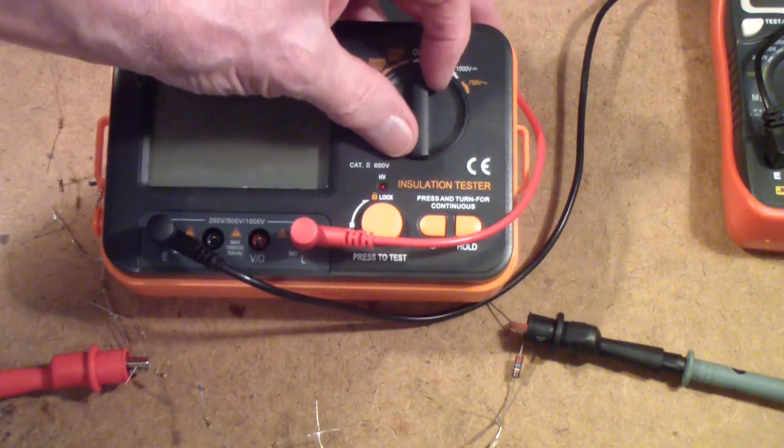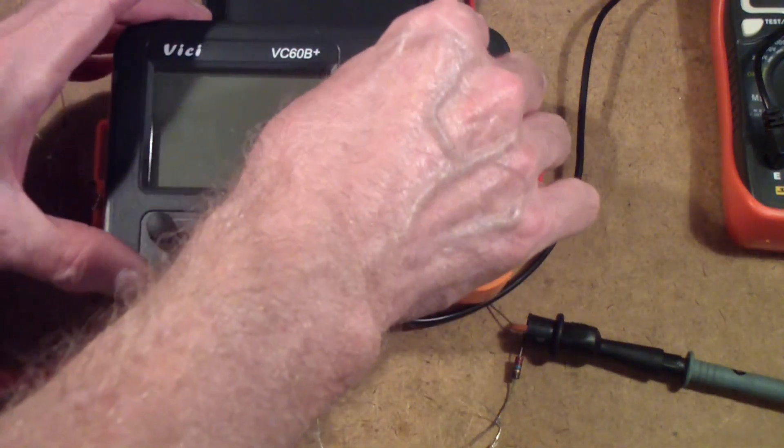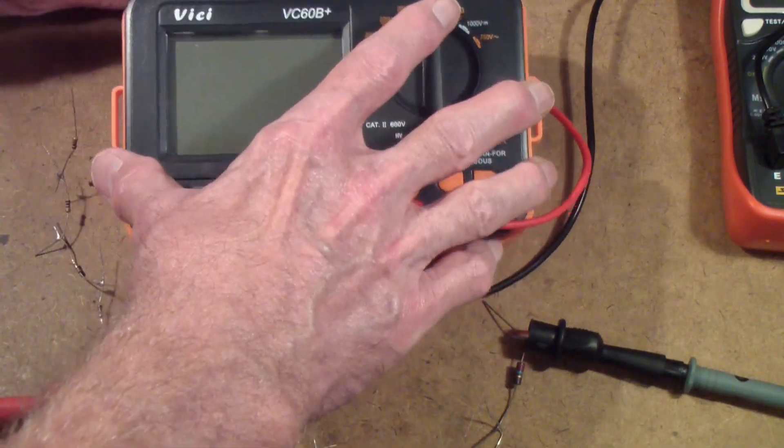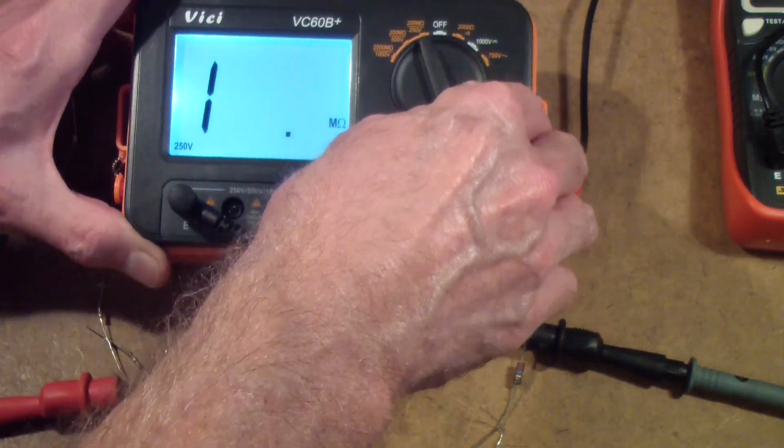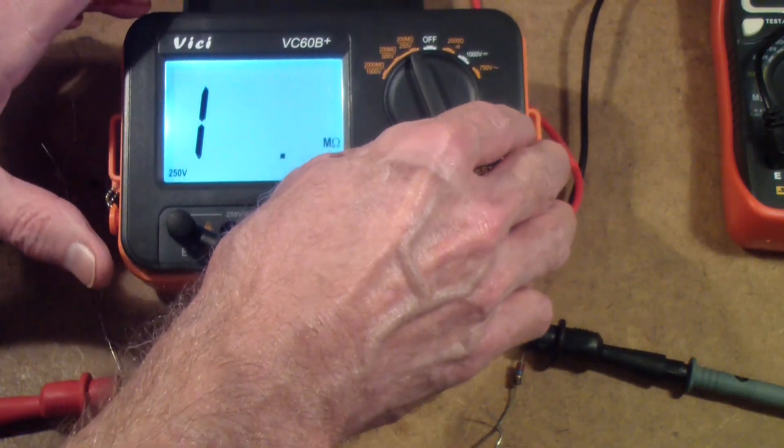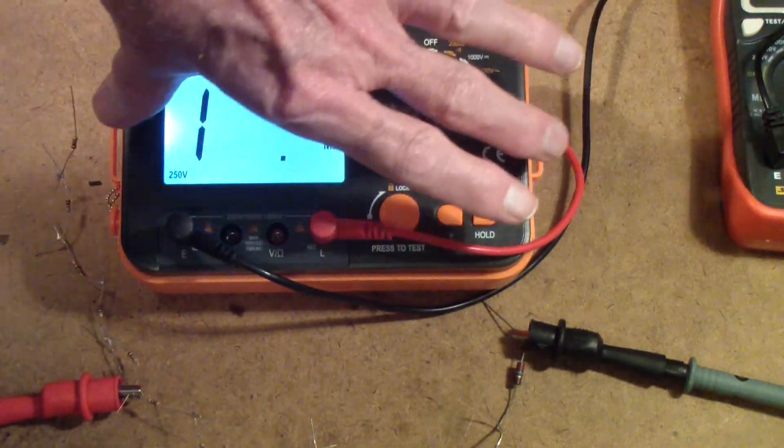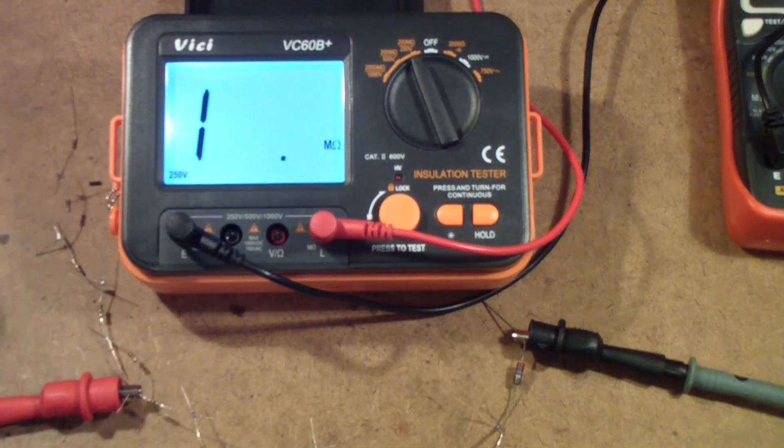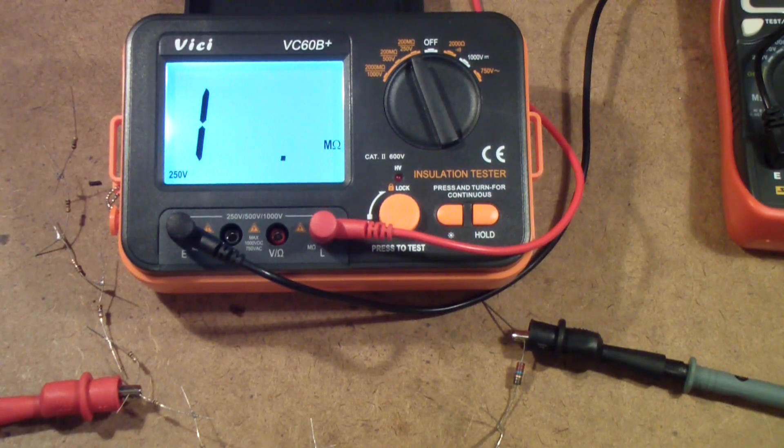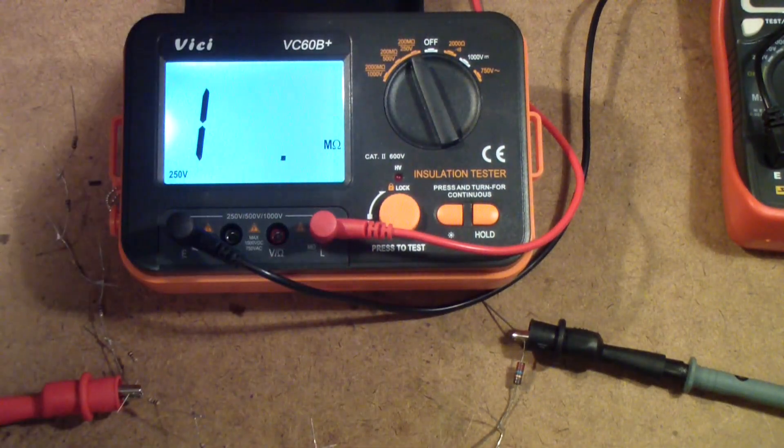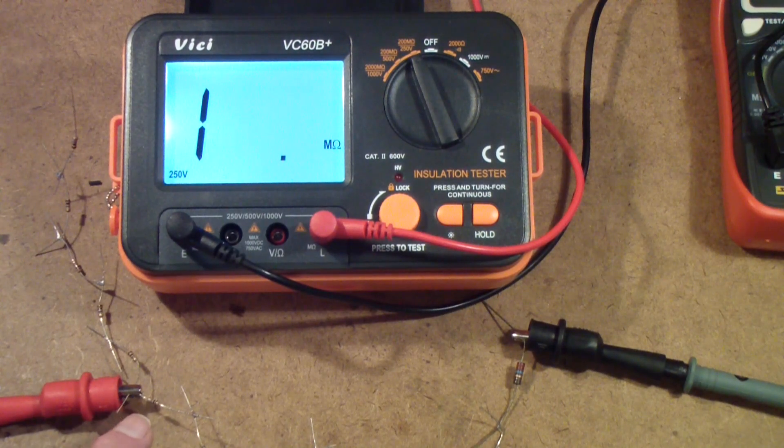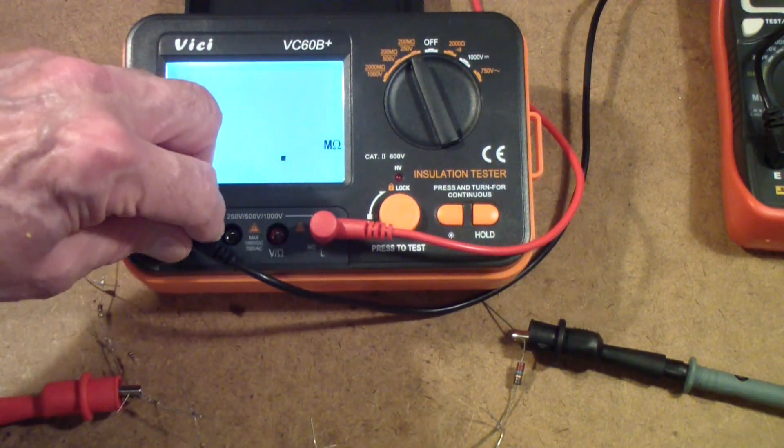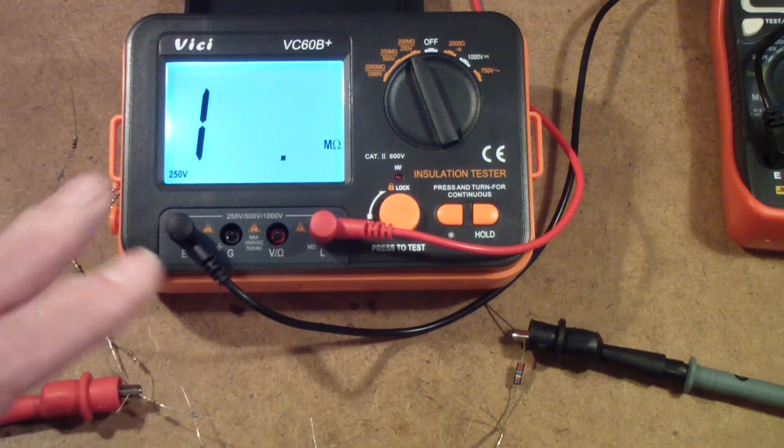So this VC60B, I'm going to try to prop it up on part of its stand there. It doesn't really come with a proper stand. This is just the cover that goes over the top of this. You can put it on the back when you're using it. And then when you want to store it, you put this cover on. So what I have is the probe connected to the same point.